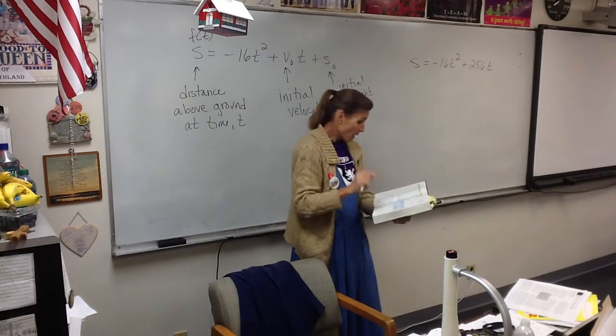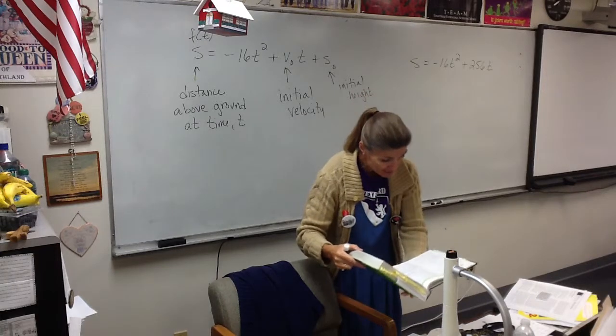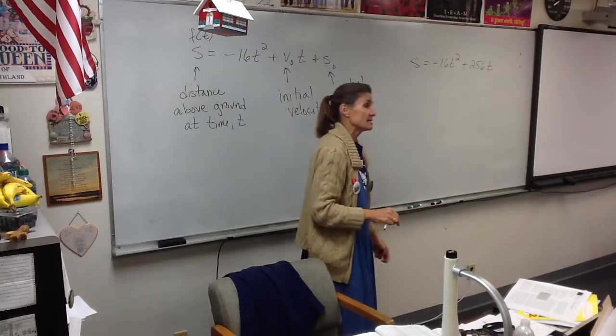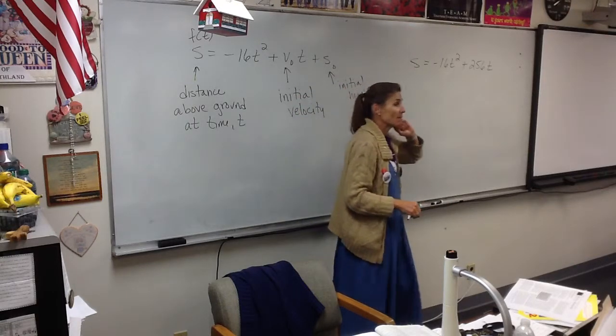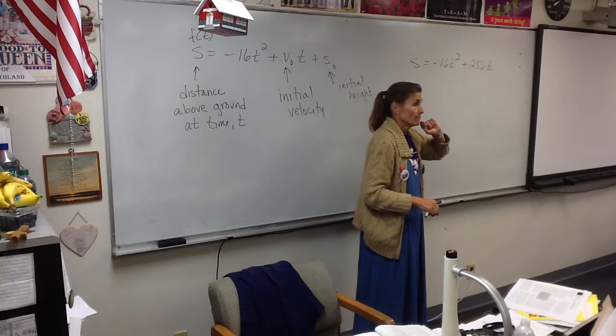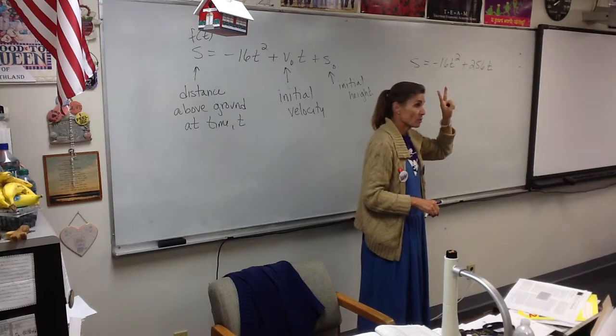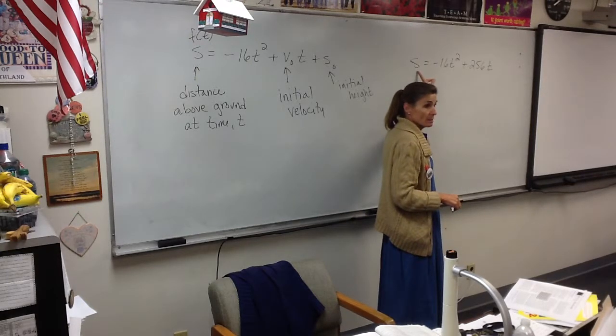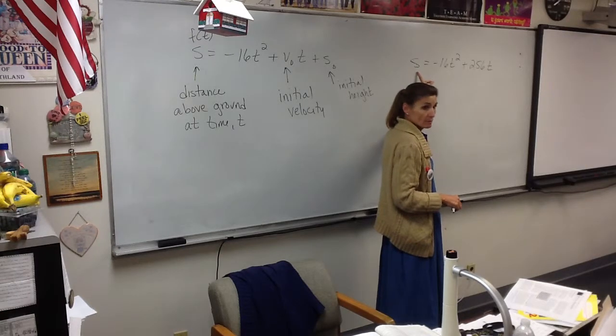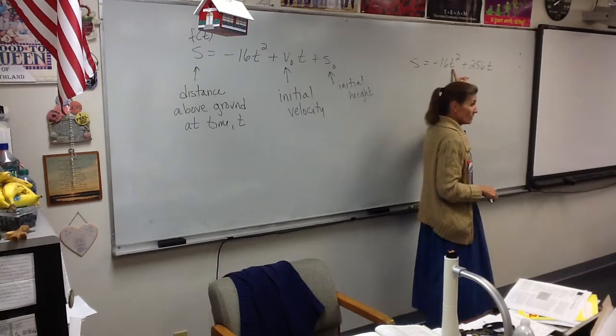Part A. When will the projectile's height above the ground be 768? Okay, so this is our equation. It has how many variables in it? Two. There's two variables in this equation, right? What does this variable stand for? The height above the ground. What does this one stand for? Time.